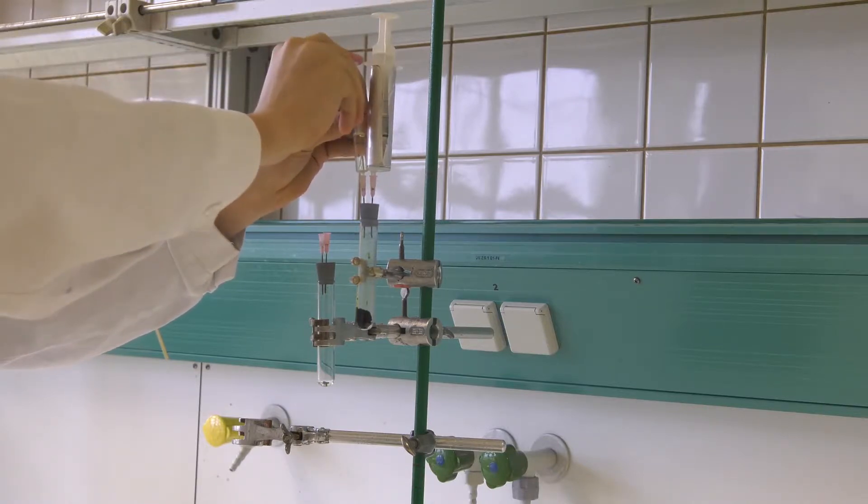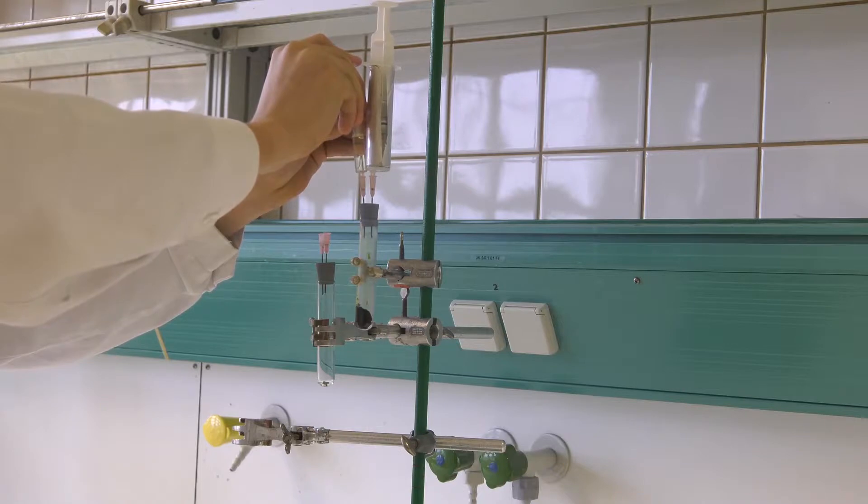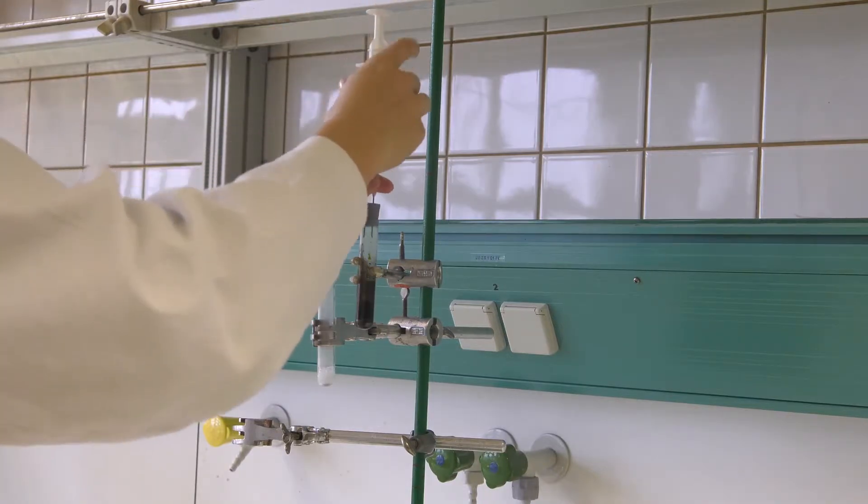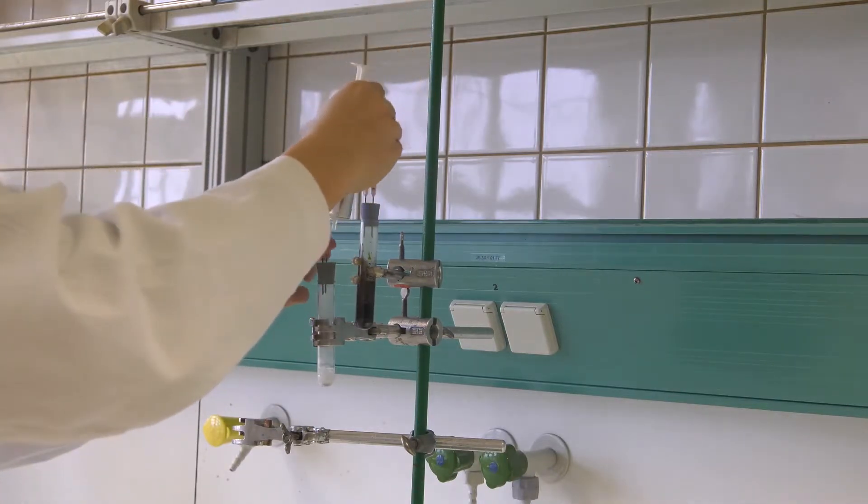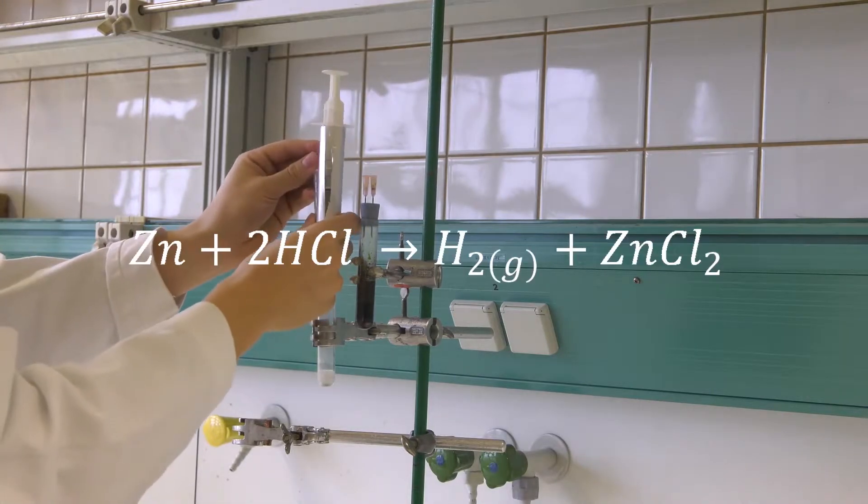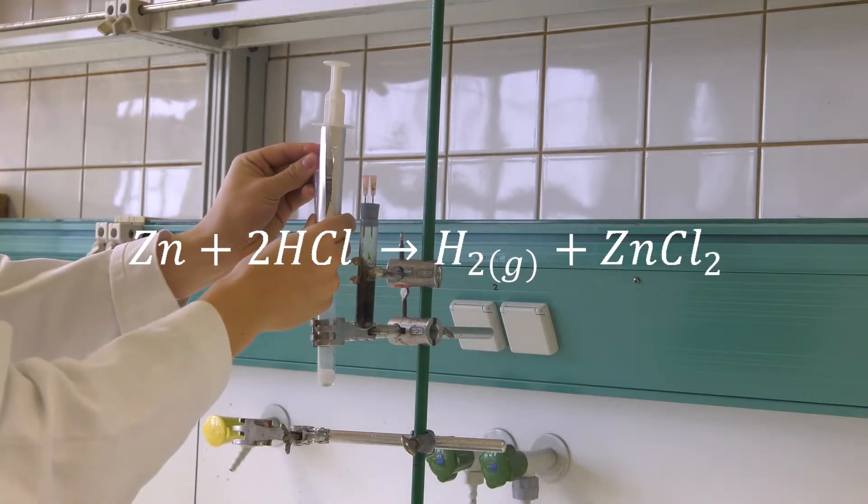Afterwards, take the chlorine gas within the cannula to another test tube with zinc in it. Next, fill hydrochloric acid into another cannula and add it dropwise into the test tube.